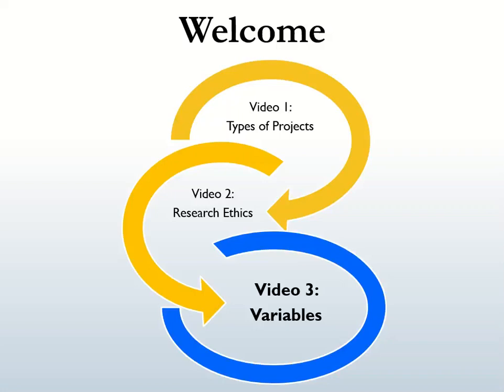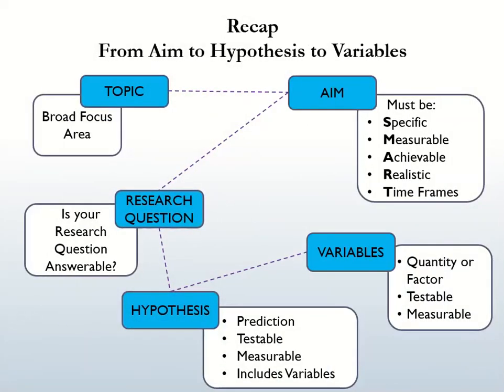Specifically, we will help you to identify variables in scientific investigation type experiments. Let's recap: in our first series of videos we helped you write a research plan, and we took you from idea to a hypothesis in five easy steps. The next step involves identifying your variables.